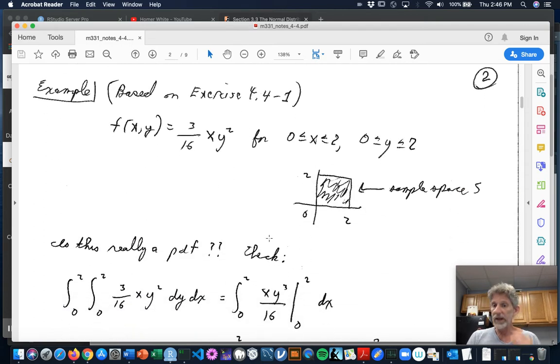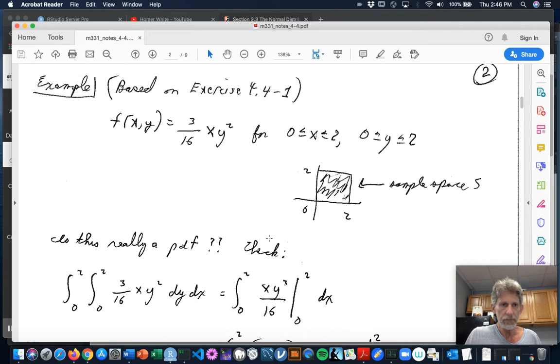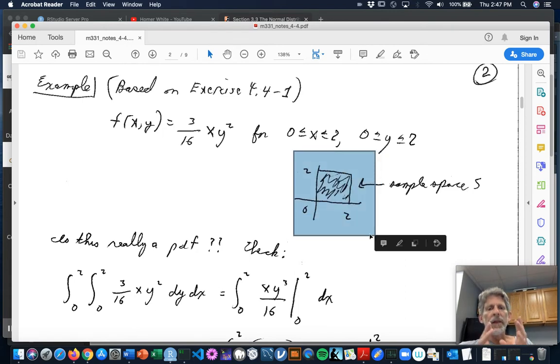So let's do an example. It's based on exercise number one in this section. But we'll just kind of take off and do all of our own favorite computations with it. So grab some coffee. Let's say that we propose the following as a PDF for a bivariate random variable. f of little x, y is 3/16ths x y squared, if x is between 0 and 2 and y is between 0 and 2. Outside of that, it's understood to be 0. So when you see something like this, you should just start drawing pictures for yourself. So here I am drawing a picture, the x-axis, the y-axis, and that shaded square is the sample space s for this function.